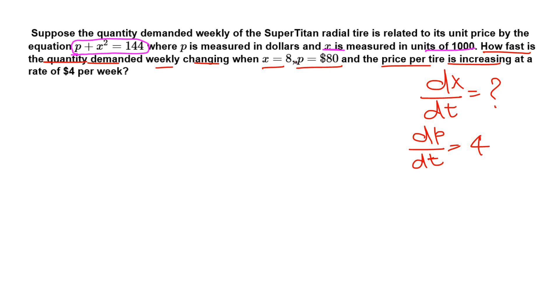Okay, so let me write down everything here now. So here we have given the relationship between the price P and the number of tires in thousands: P plus X squared equals 144.